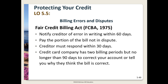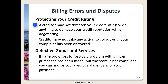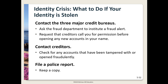The Fair Credit Billing Act of 1975 has the following provisions: you are required to notify a creditor in writing within 60 days of an error; you must pay the part of the bill not in dispute; the creditor has 30 days to respond and 90 days to either correct your account or explain why. A disputed item won't affect your credit rating while the dispute is active. You can withhold payment on damaged or poor-quality items purchased with a credit card, but you must make a sincere effort to resolve the problem with the creditor. A creditor cannot threaten your credit rating while you're negotiating disputed charges; all action must wait until the dispute is settled. If you've received defective goods or services and made a sincere effort to resolve the issue, you can ask your credit card company to stop payment.